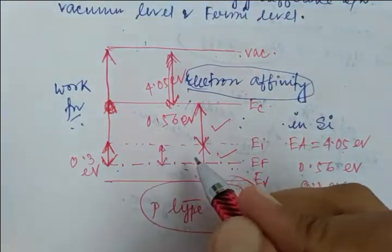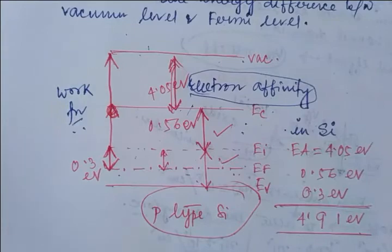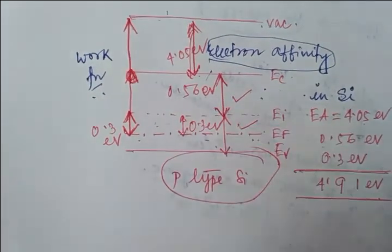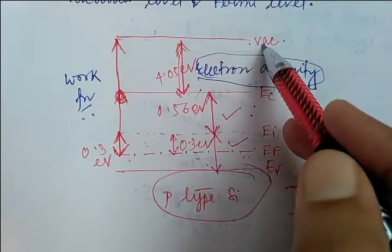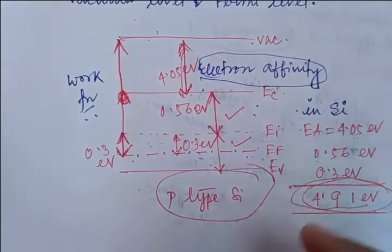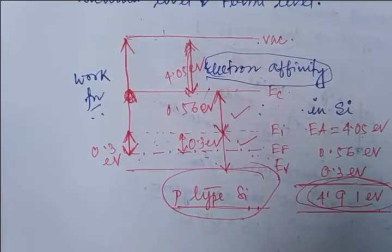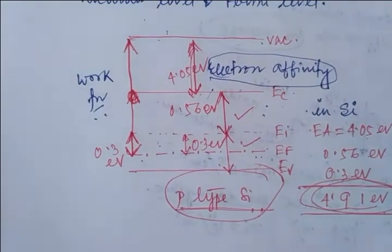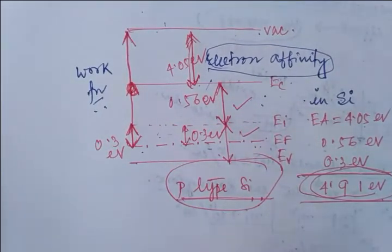The bulk potential is the gap between your intrinsic energy band and the Fermi band — 0.3 electron volts due to doping concentration. Adding these three values gives the work function, which is the distance between your vacuum and the Fermi energy level: 4.91 electron volts for p-type silicon. Keep these values in mind as they are important for higher studies and research.